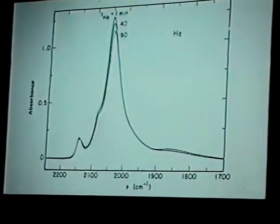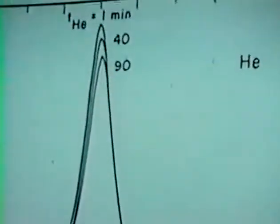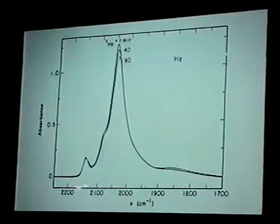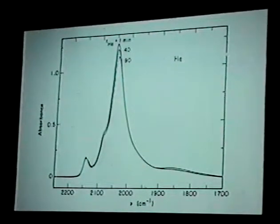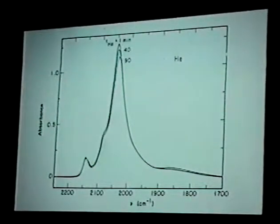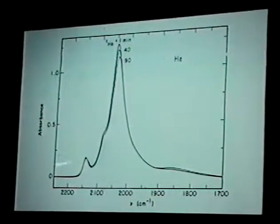Now let's look first at the infrared spectrum to remind ourselves where the peaks are. Here is a typical spectrum showing three peaks at 2144, 2082, and 2047 wavenumbers. The assignment of the central peak is without dispute. If we change the order in which we introduce CO to the catalyst in the form of pulses, what we find is that the band at 2047 wavenumbers is populated first, and it's only after we start to saturate that feature that we get the pair of bands at the higher frequencies.